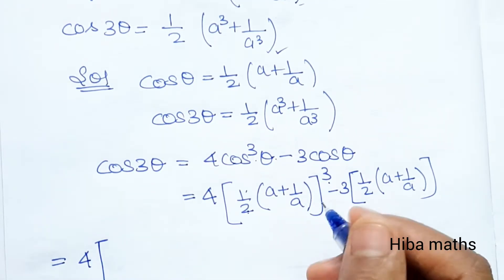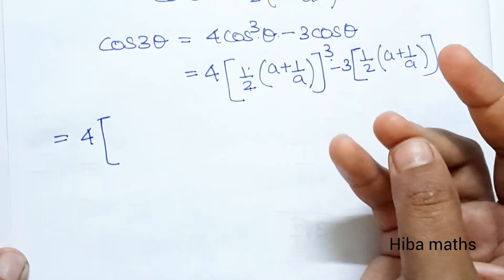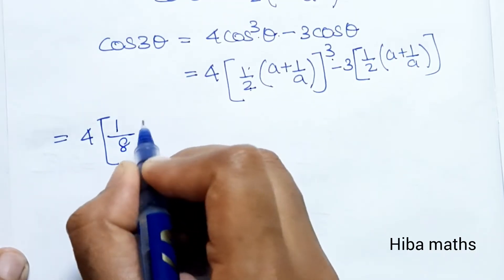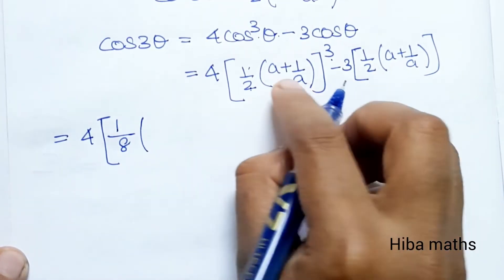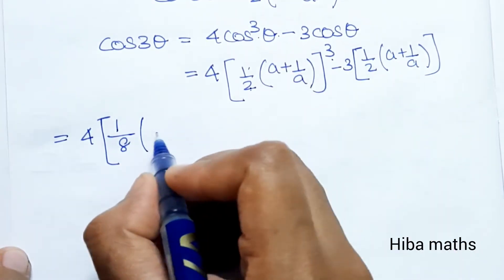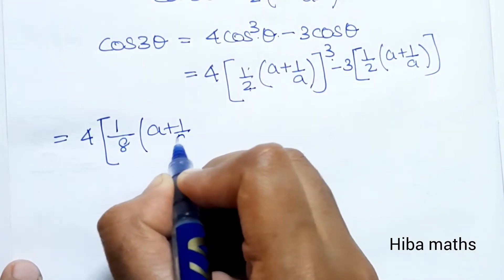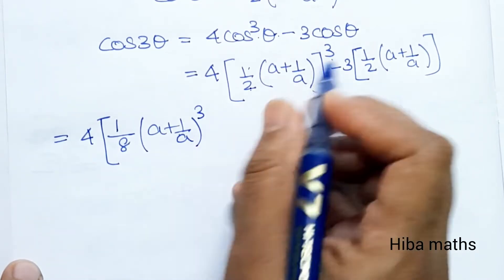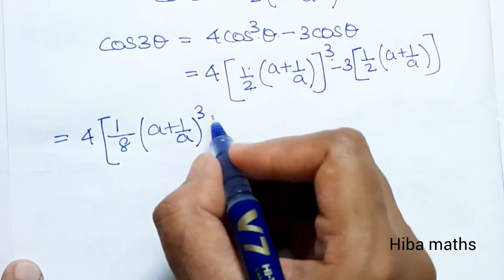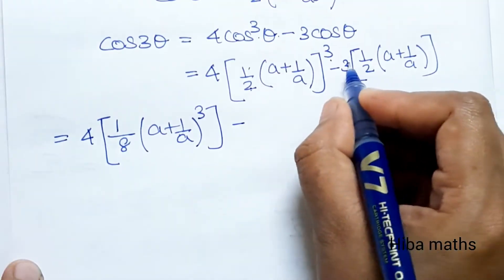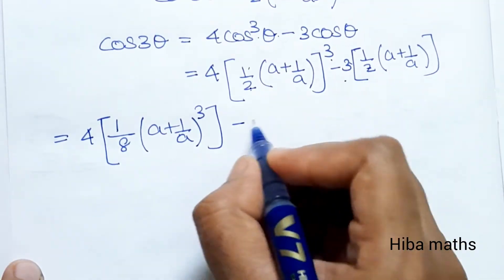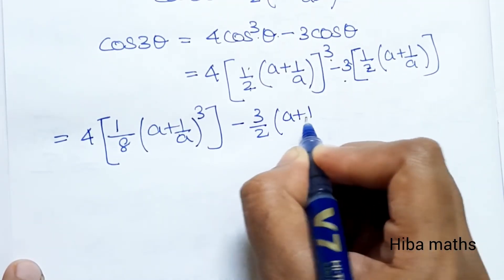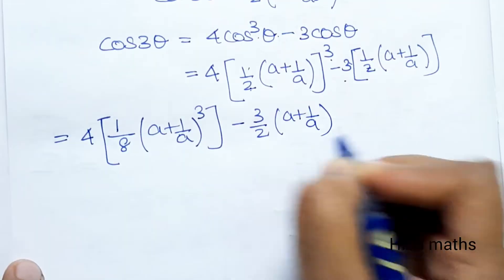Now 2 cube is equal to 8, so 4 into 1/8 gives 1/2. So we have 1/2 times (A plus 1/A) whole cube, minus 3 into (1/2) times (A plus 1/A), which gives 3/2 times (A plus 1/A).